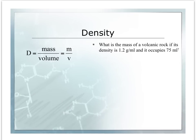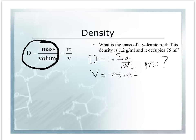The final problem we're going to do together is: what is the mass of a volcanic rock if its density is 1.2 grams per milliliter and it occupies 75 milliliters? Write down your known: density equals 1.2 grams per milliliter, volume is 75 milliliters, and we're looking for mass. Our equation is density equals mass divided by volume, so we need to solve to get mass by itself. To get mass by itself, we multiply each side by volume. That cancels the volume on this side, leaving mass equals volume times density.